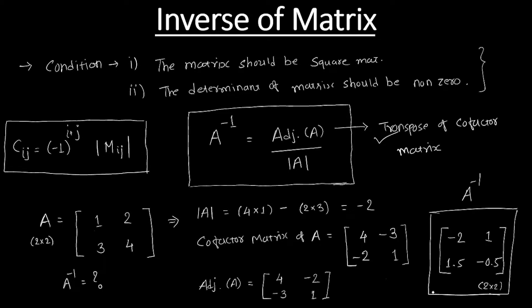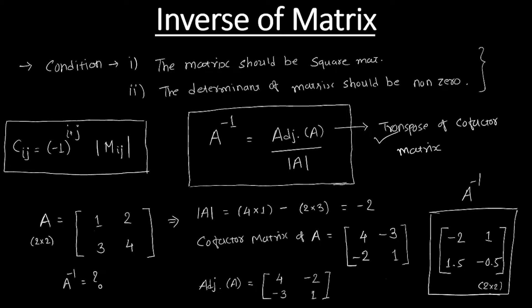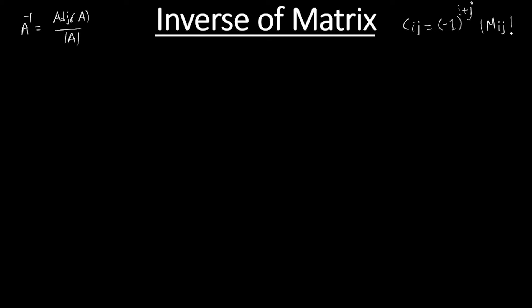In practice, most of the time we will have a problem with a 3×3 matrix. So let us recap the key formulas. The inverse of any matrix equals the adjoint of that matrix divided by the determinant. The adjoint is the transpose of the co-factor matrix. The formula to find the co-factor is: Cij equals minus one raised to i plus j, multiplied by the determinant of the minor of ij.